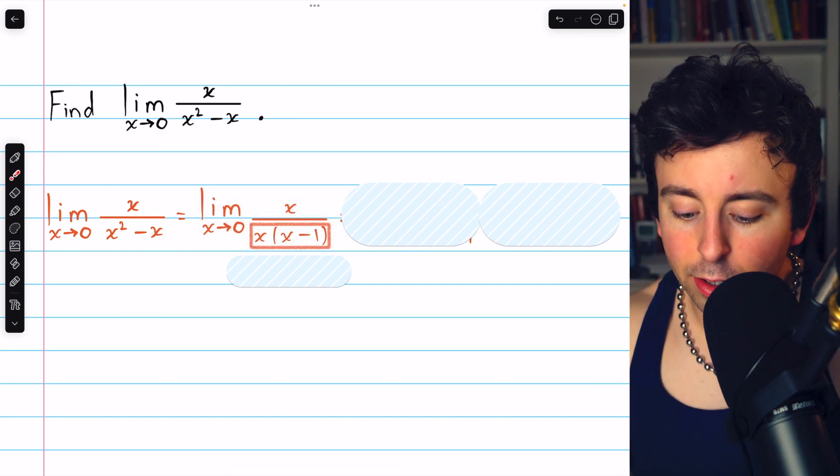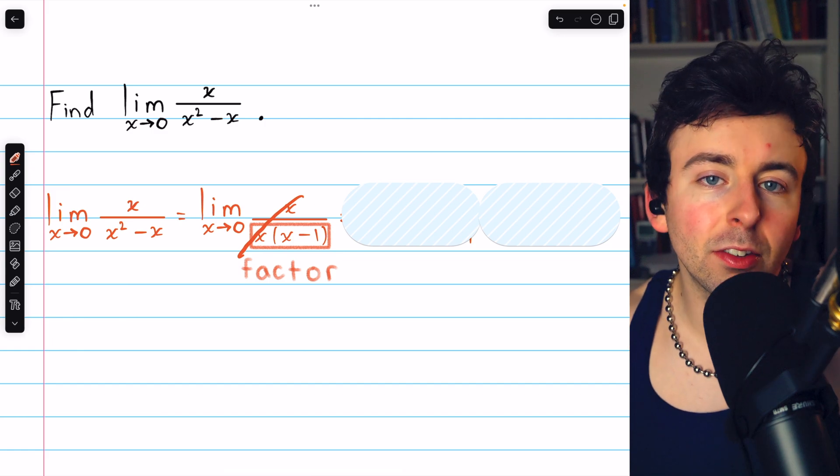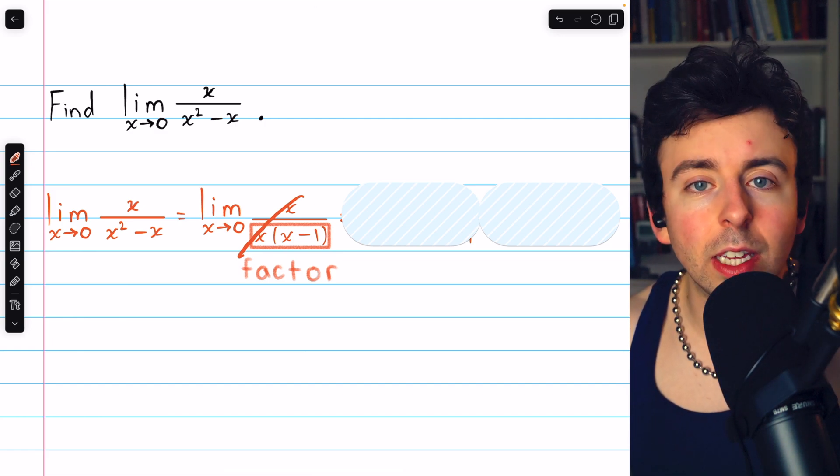So here we rewrite the expression in the limit by factoring that x out of the denominator. Now you can see we'll be able to cancel those x's, and by doing so we remove the discontinuity from the expression.